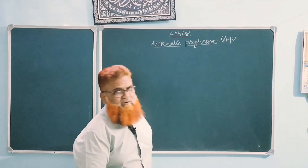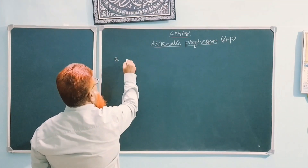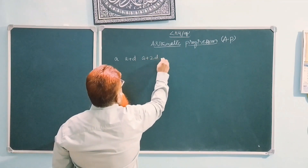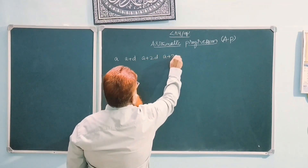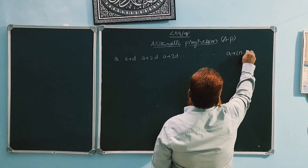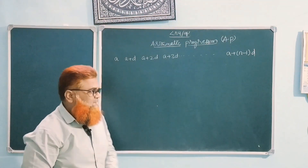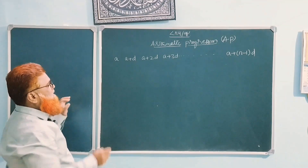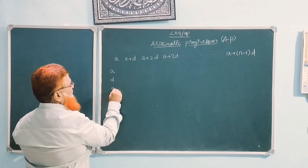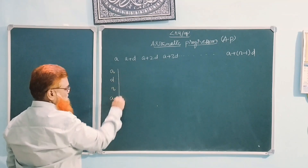What is the general form of an AP? Let's recall: A, A+D, A+2D, A+3D, etc. The last term, that is the Nth term, is A + (N−1)D. The first term is A, common difference is D, total number of terms is N, and the last term is AN.